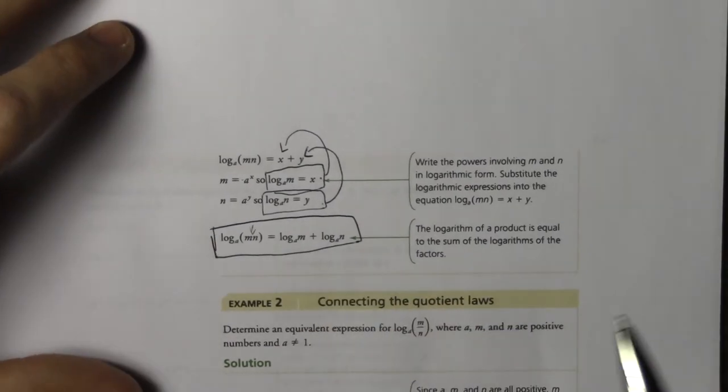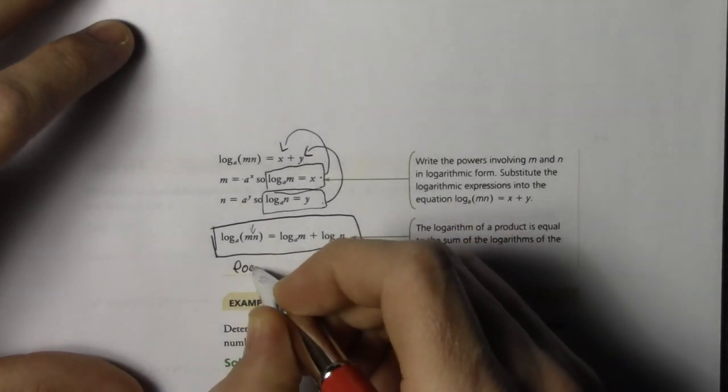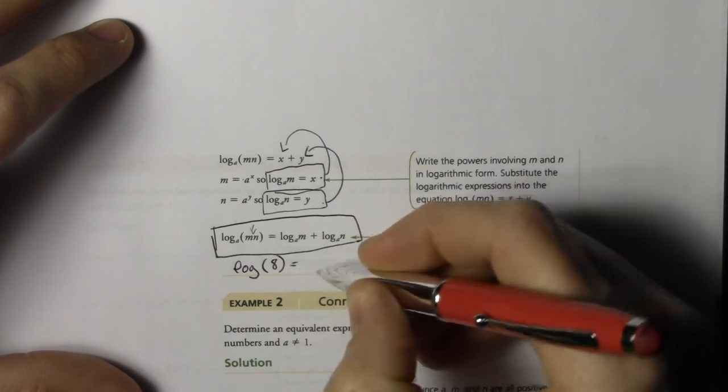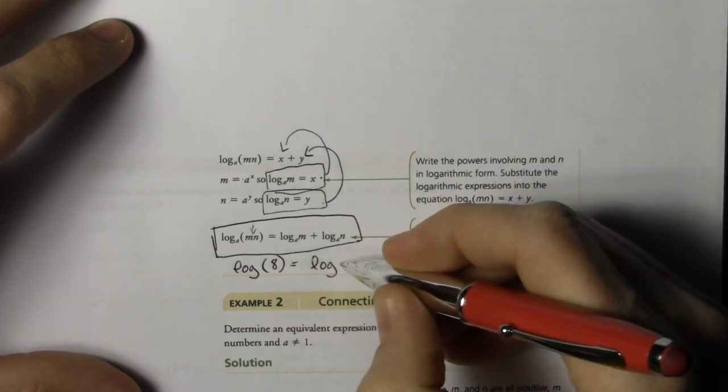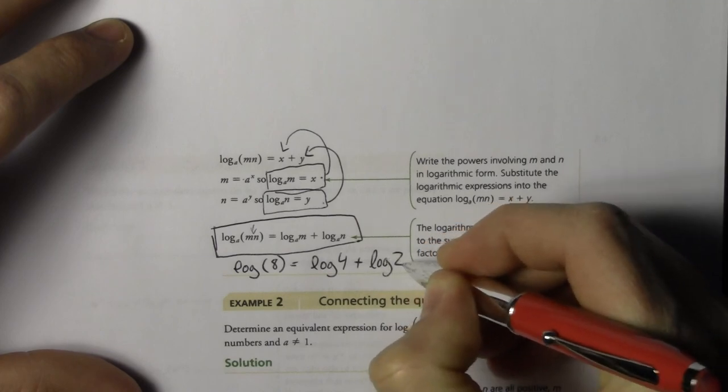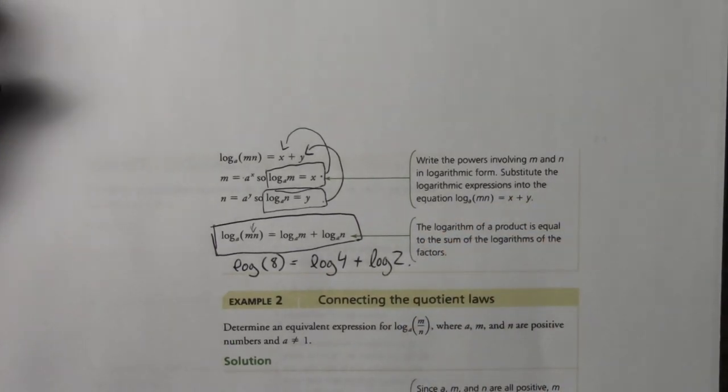If you wanted to, you could just type in log 8 and then try log 4 plus log 2 and see if you get the same answer.